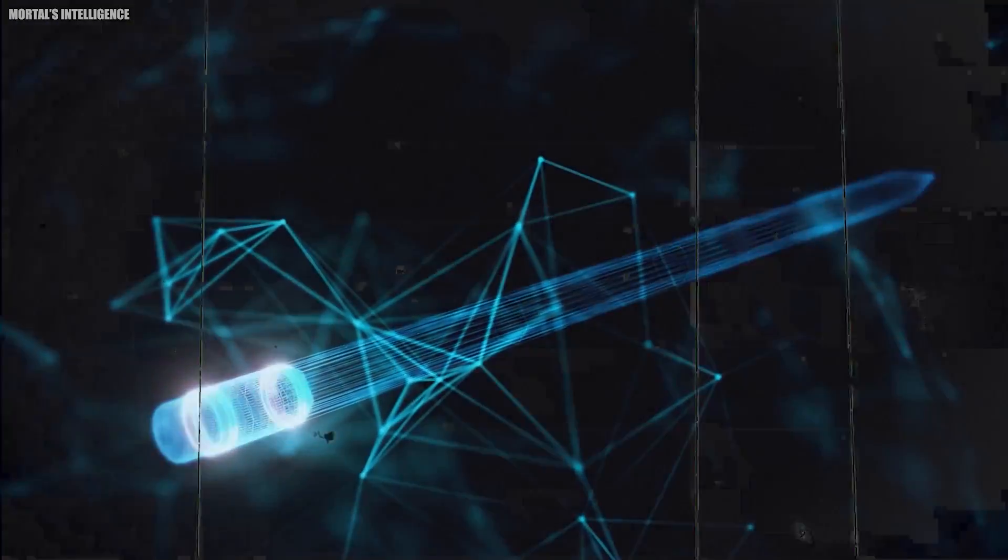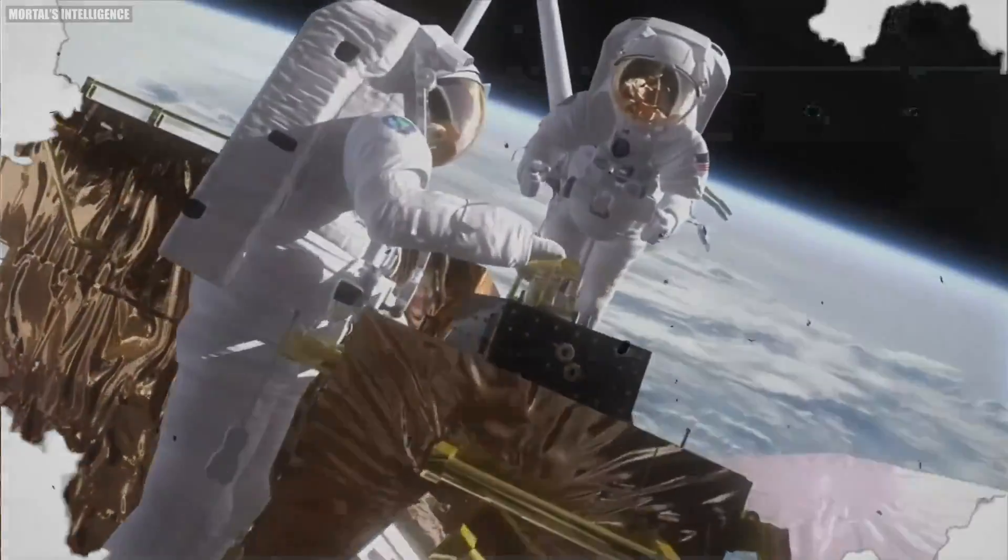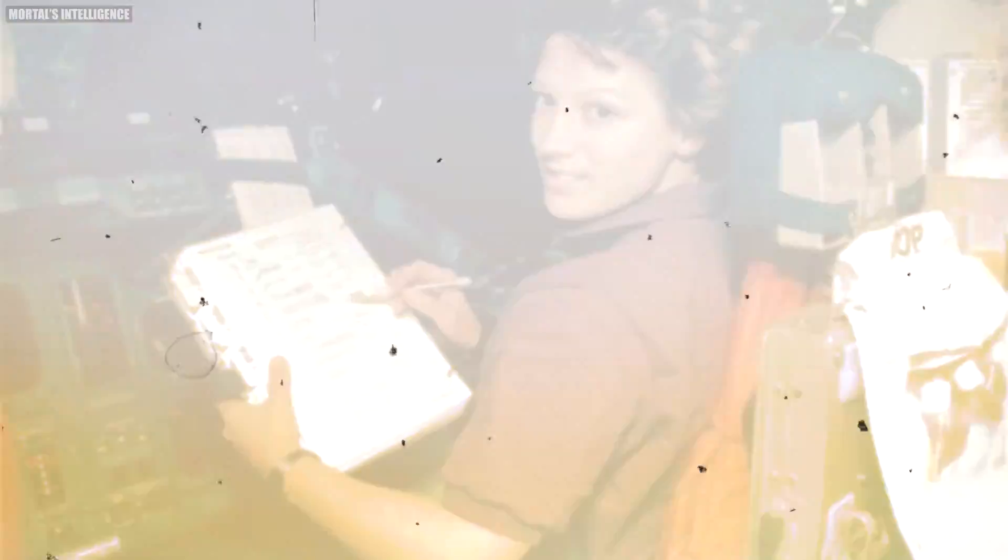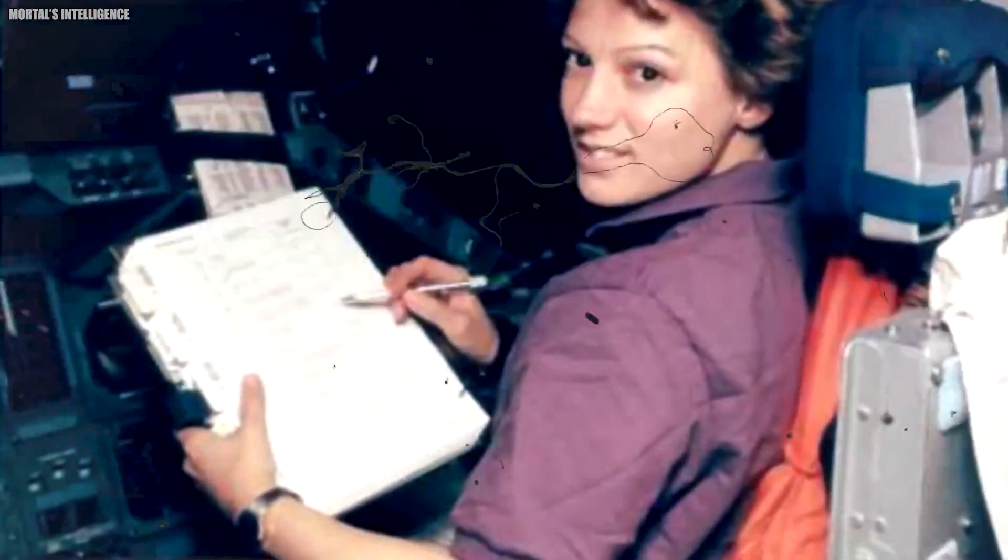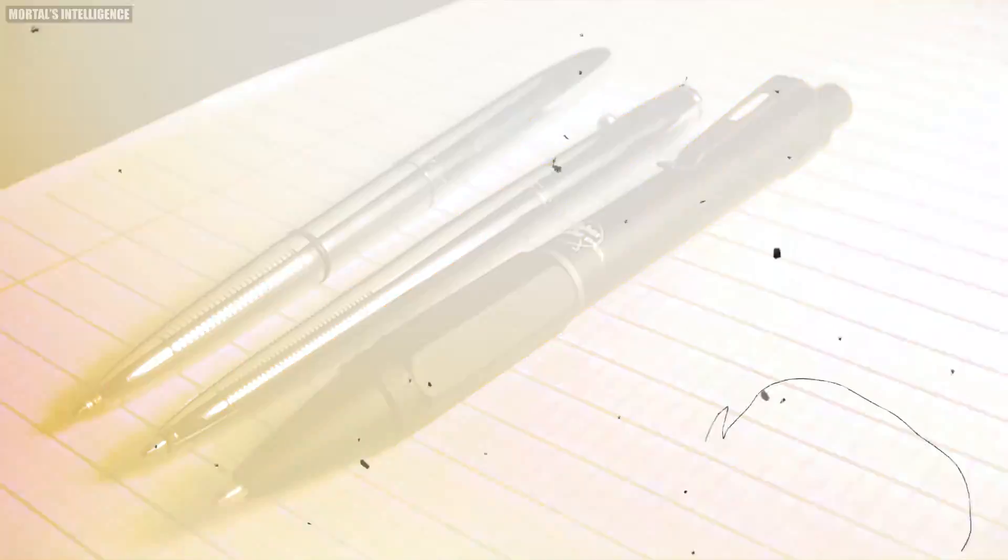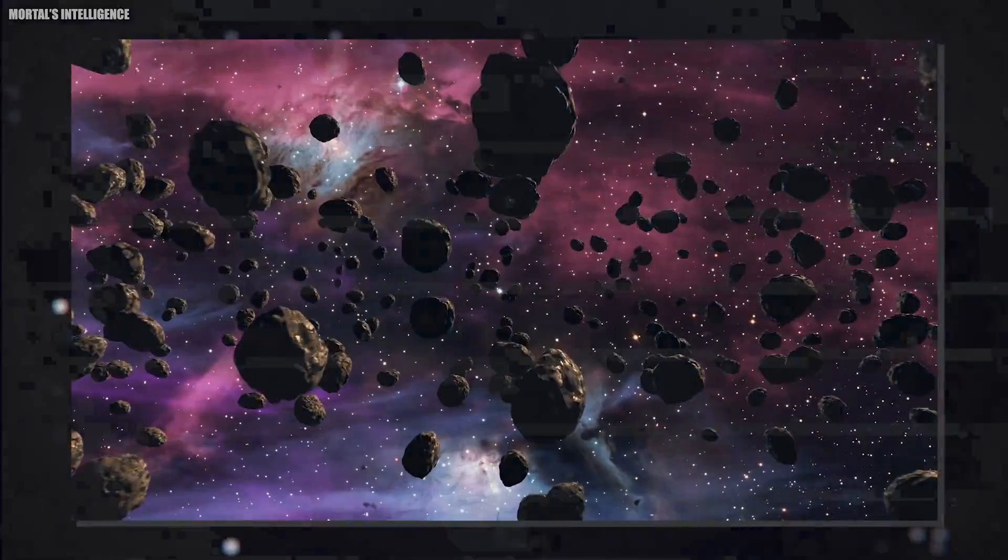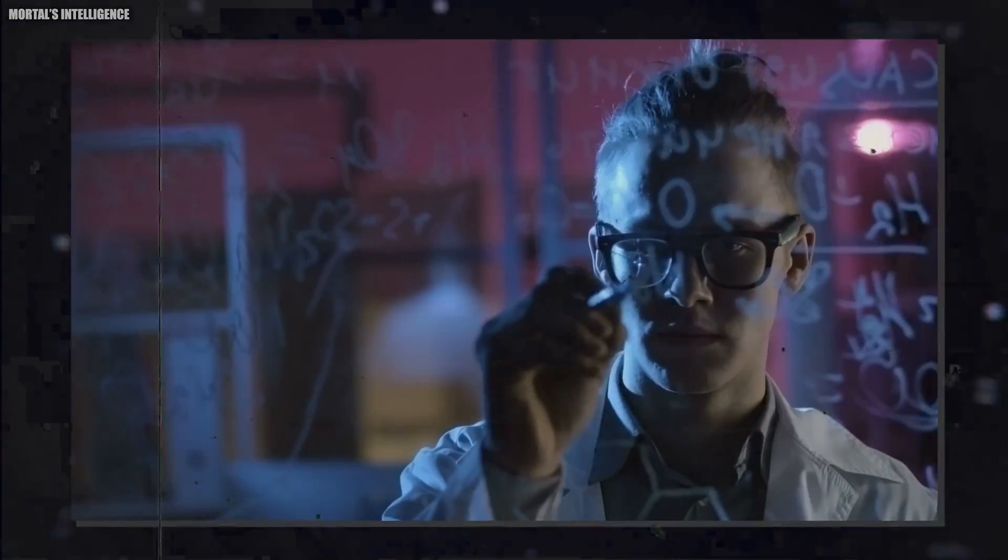Another interesting thing about pencils is that they are used in space. Astronauts aboard the International Space Station use specially designed mechanical pencils to record their observations and experiments. These pencils are designed to work in zero gravity and are equipped with a special grip to prevent them from floating away in the weightless environment of space.